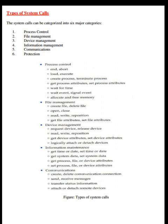Process control system calls include: end, abort, load, execute, create process, terminate process, get process attributes, set process attributes, wait for time, wait for event, signal event, and allocate and free memory.